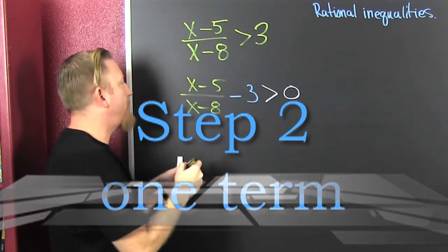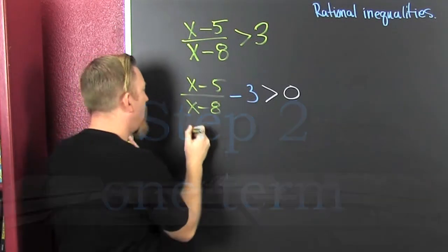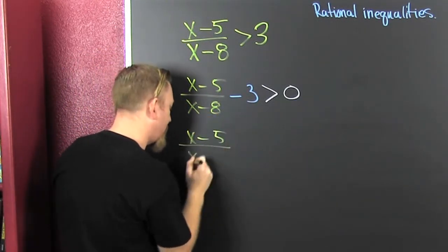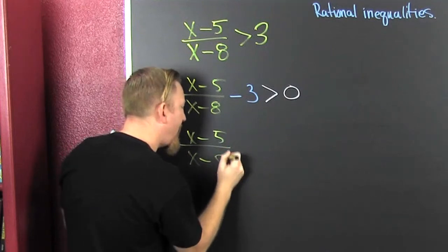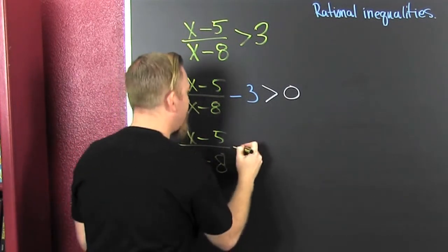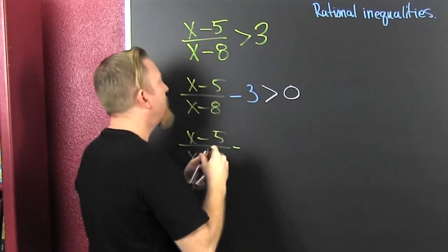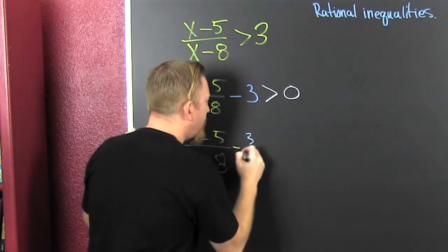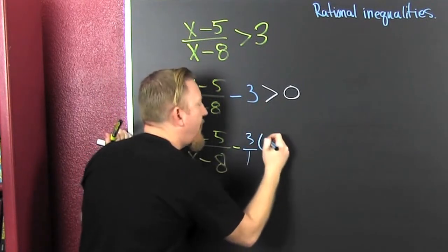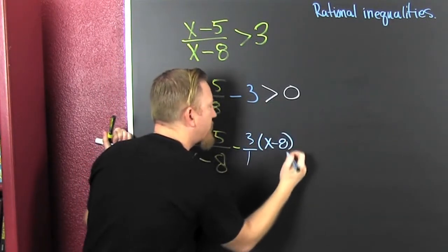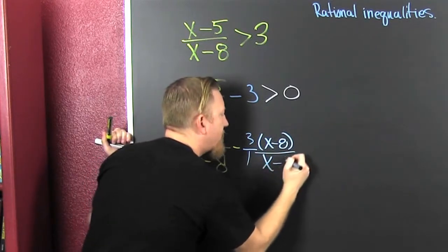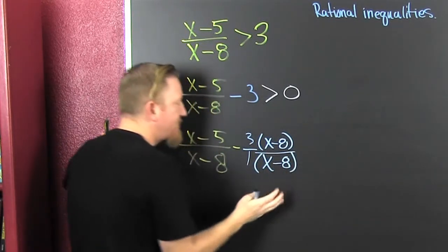I need a common denominator — the common denominator of all my denominators. That's going to be x minus 8. I take that 3 over 1 and multiply it by x minus 8, divided by x minus 8.